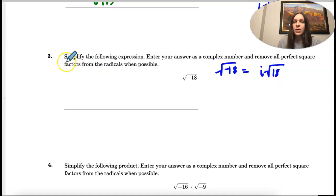And then we need to simplify. So 18 is the same as 2 times 9. And 9 is the same as 3 times 3.